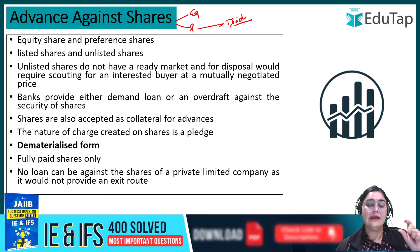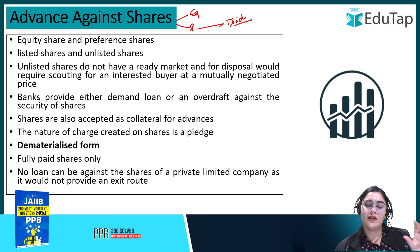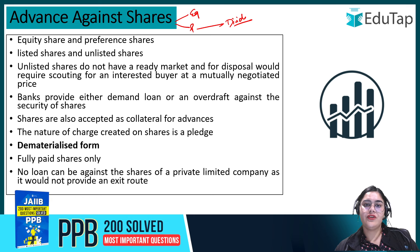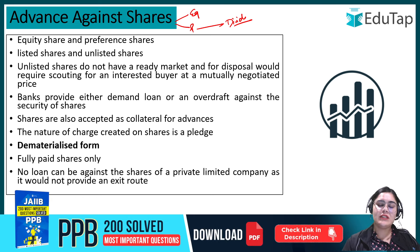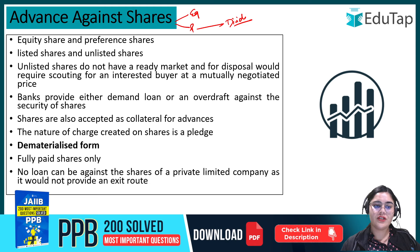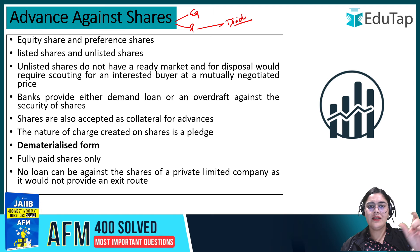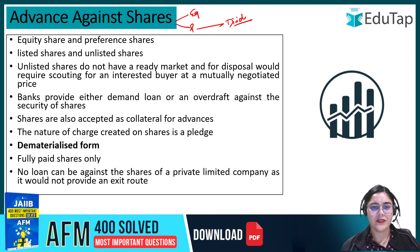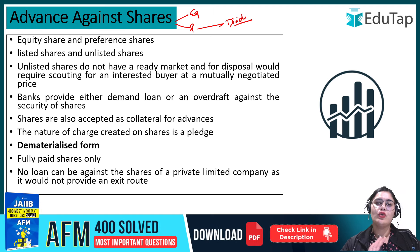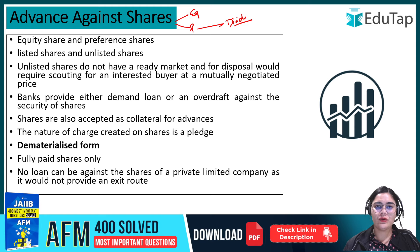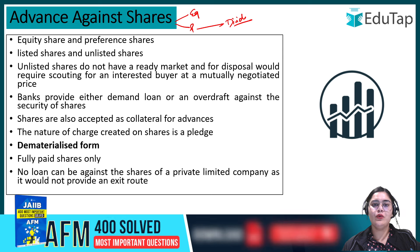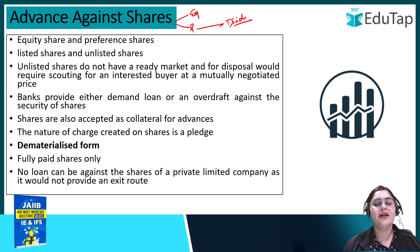The percentage of dividend for preference shares is pre-decided — for example, 12% preference shares or 15% preference shares. That is the maximum dividend they can receive. For equity shareholders, there is no certain percentage fixed for the dividend they will get.